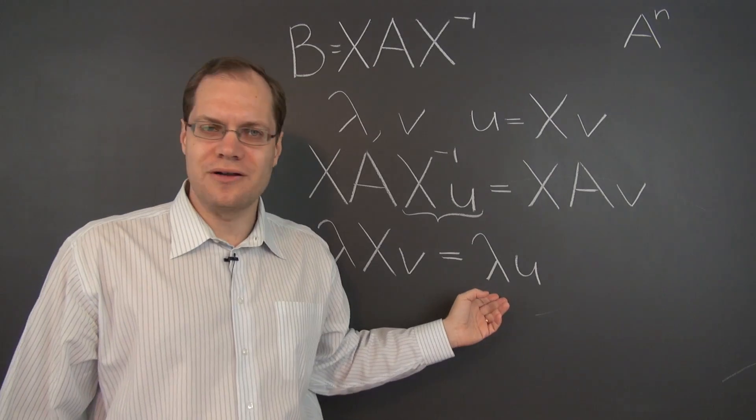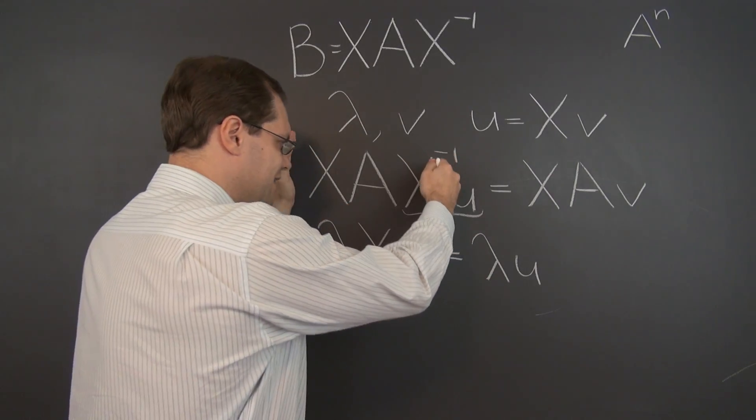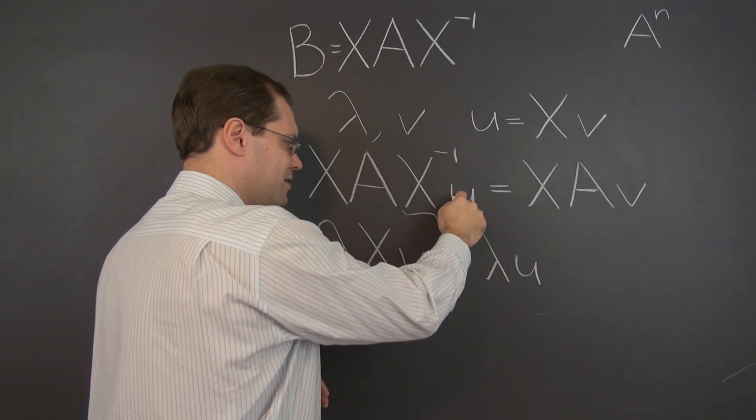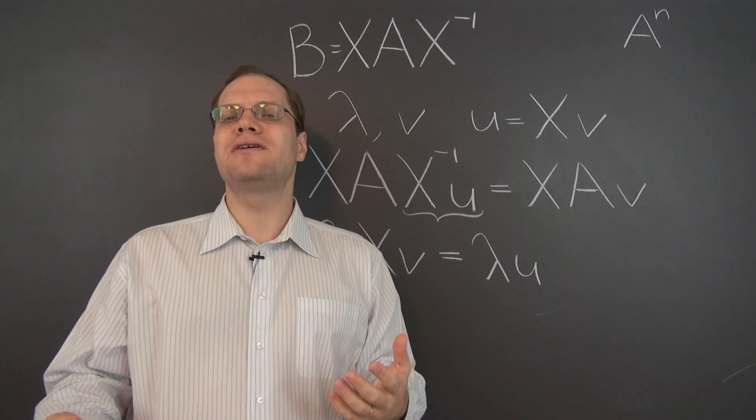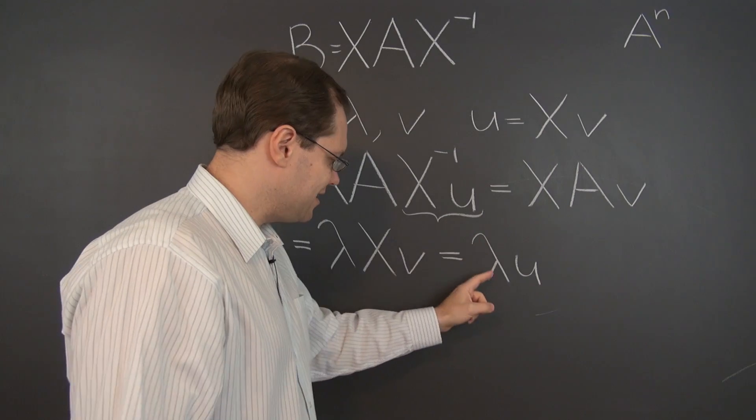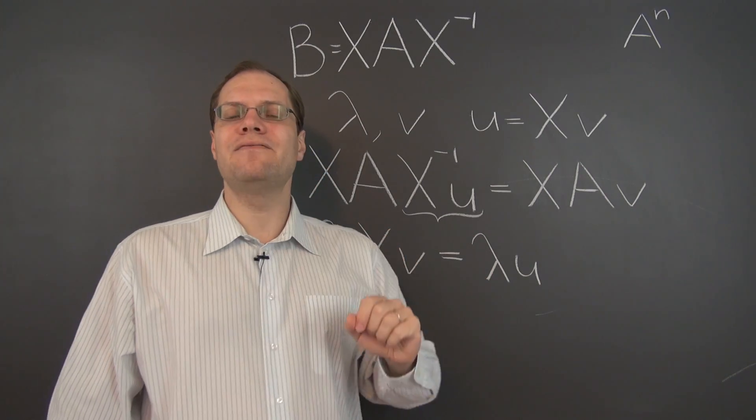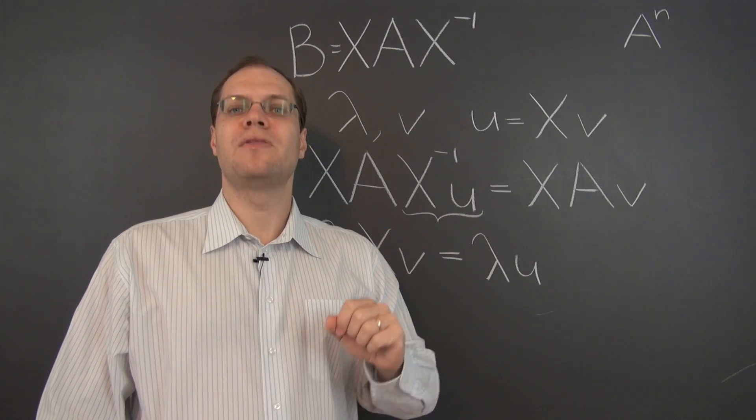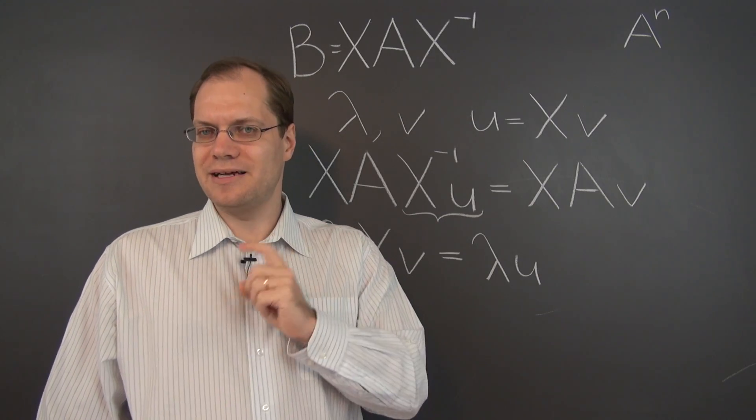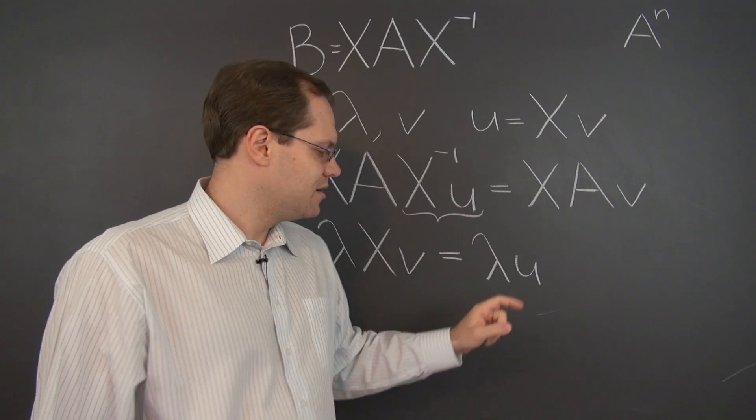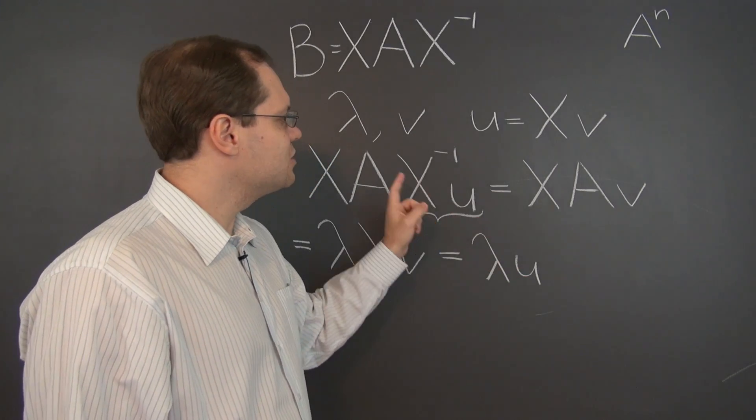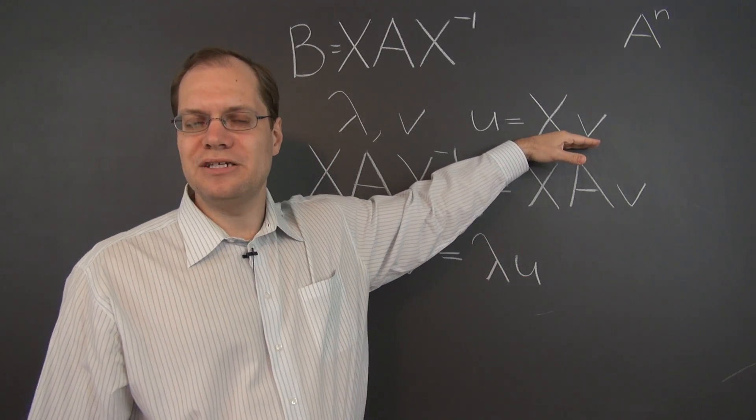So now let's see what we have on the board. What we have on the board is that this matrix, B, times U equals lambda U. So what's the only conclusion that we can reach? That lambda is the eigenvalue of B, B is related to A by the similarity transformation, and U is the corresponding eigenvector. In fact, U is related to V by this transformation right here.